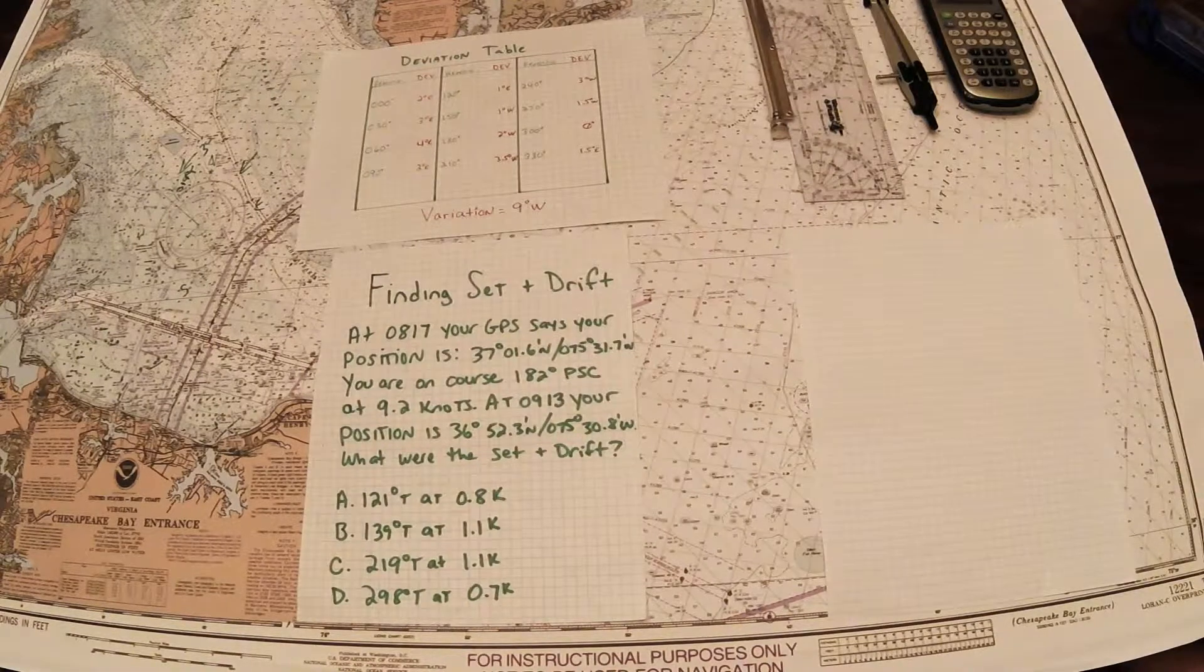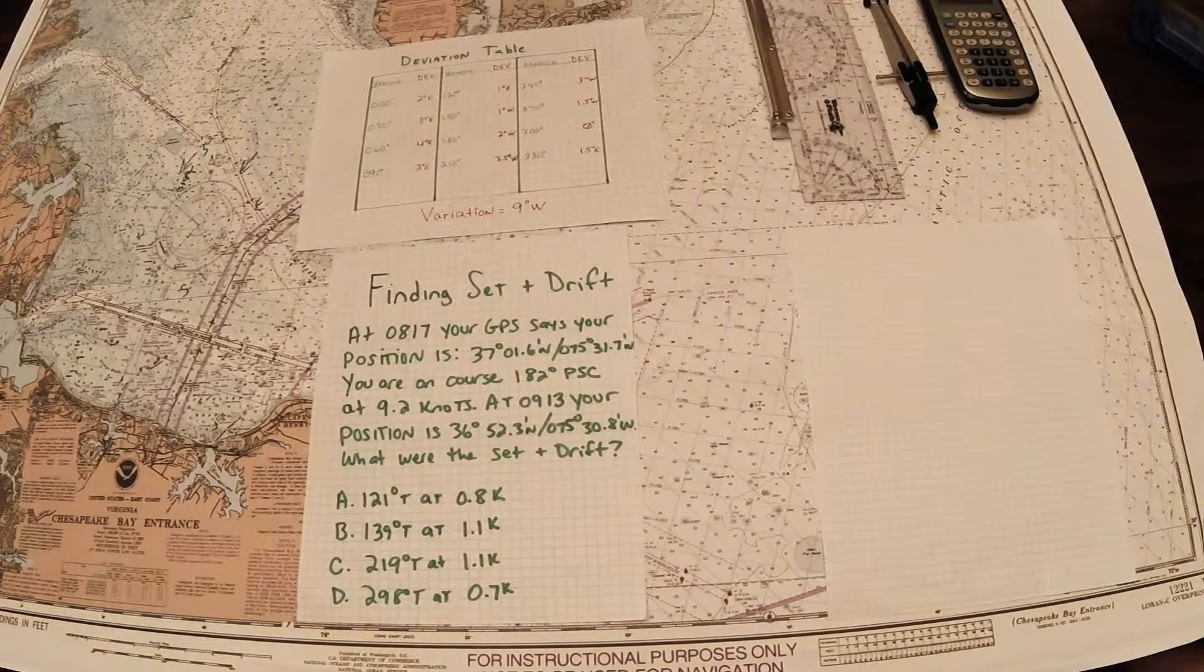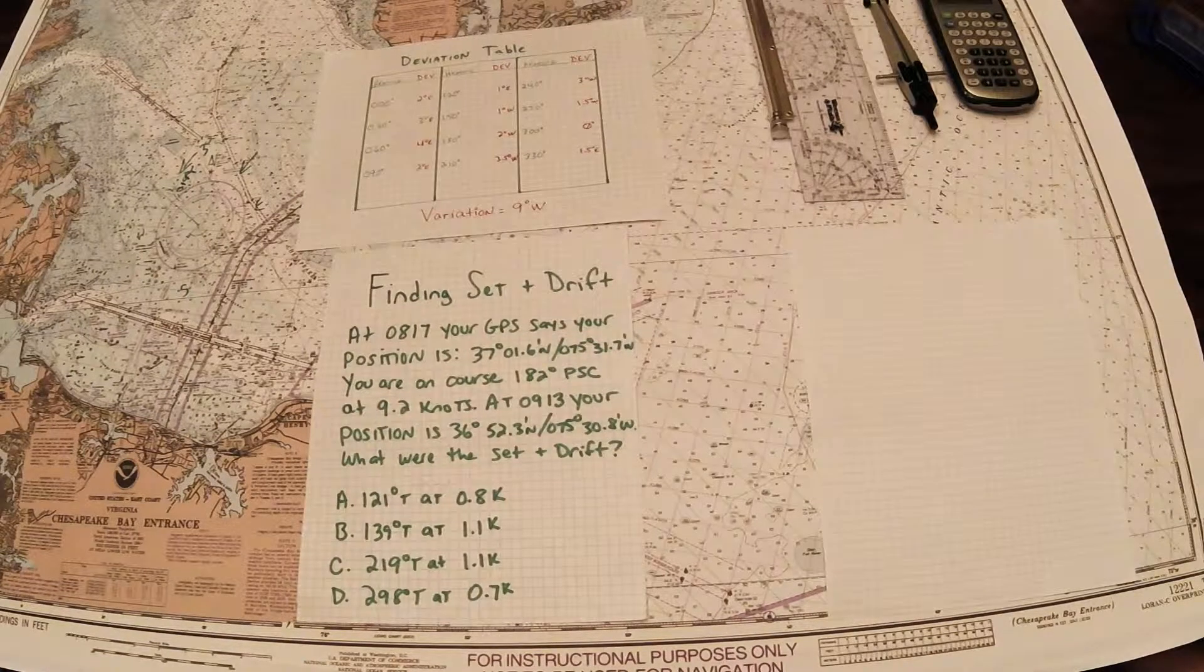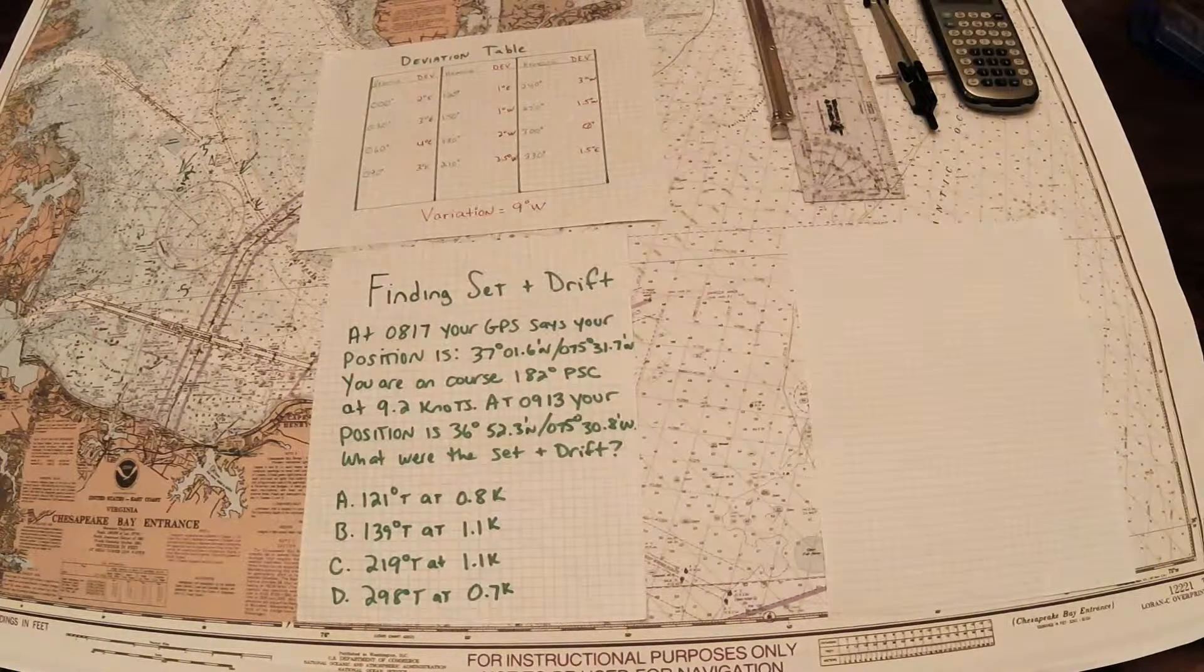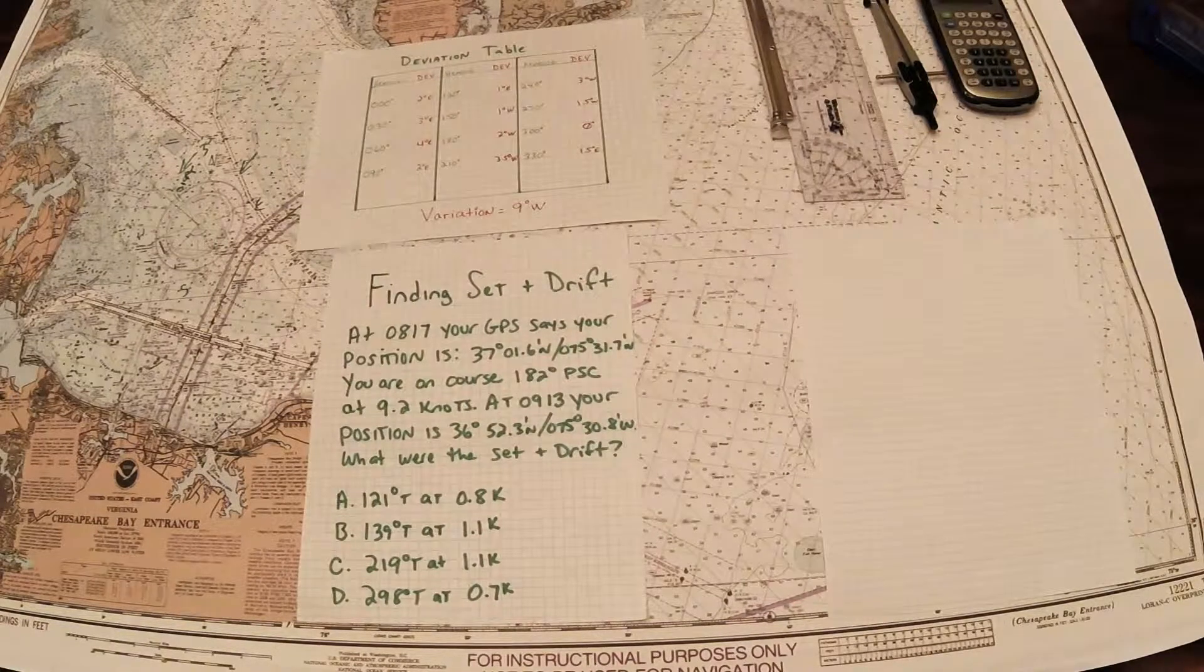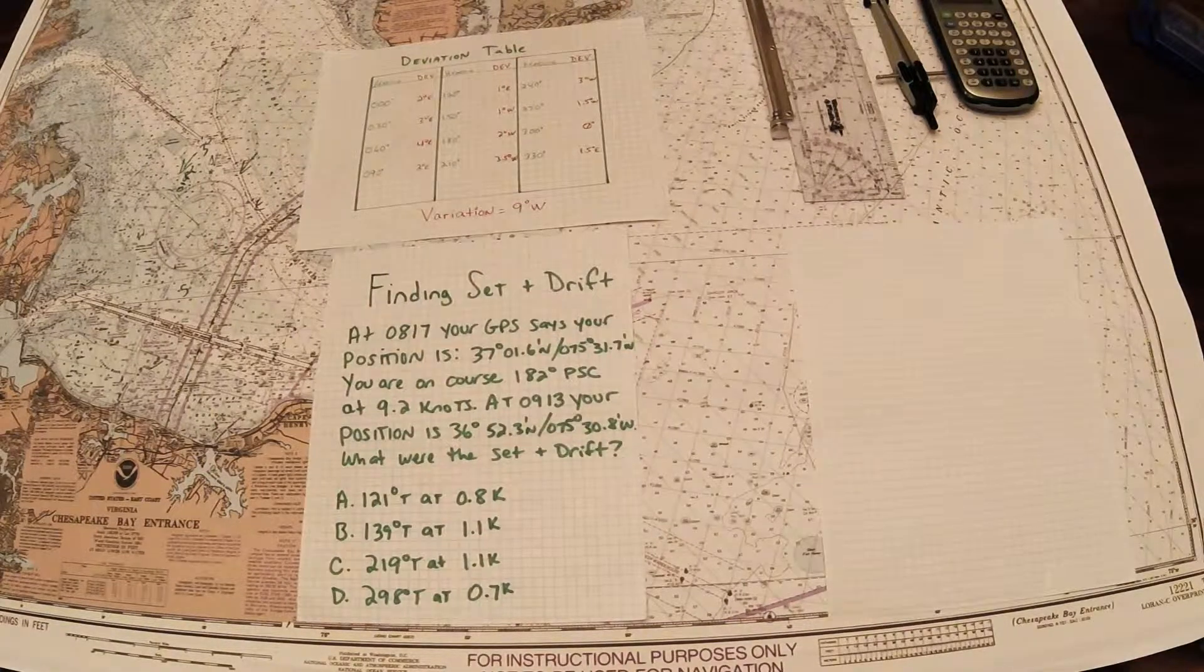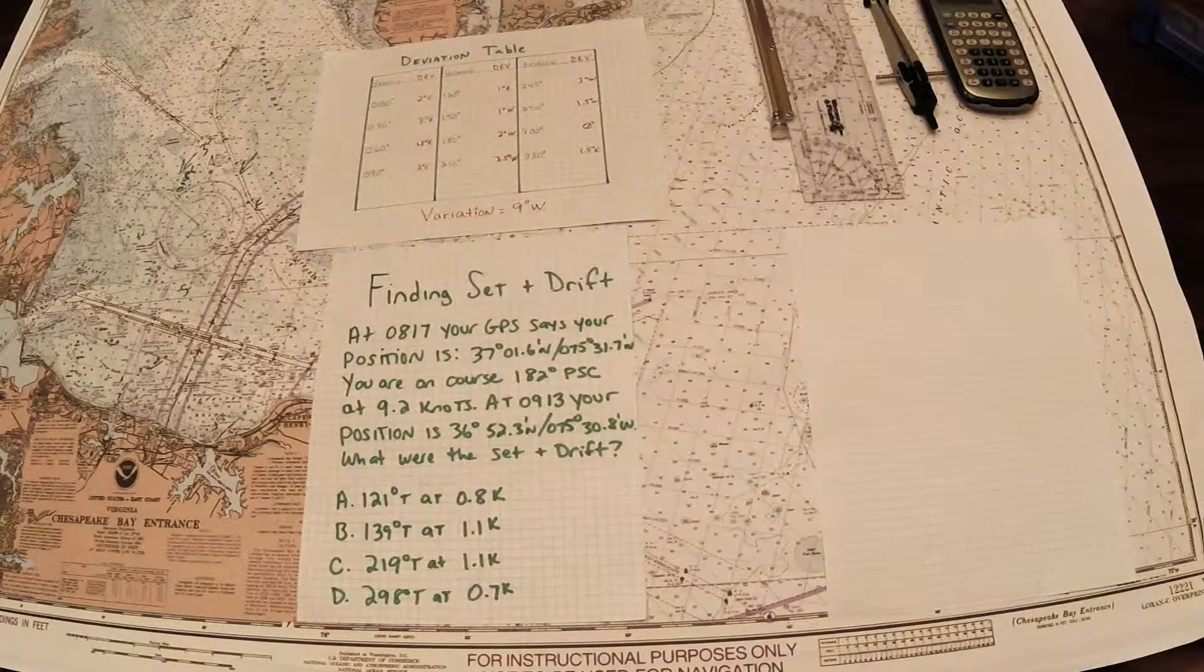Set and drift seems to be one of the more difficult problems mostly because there's a bunch of steps involved, so there's a lot of places where you can make mistakes. Generally what you're going to do is plot your position, lay out your course, plot your second position, then determine where you should have been on your course line and compare the two spots to see if there was any current.